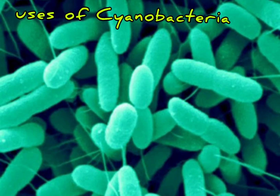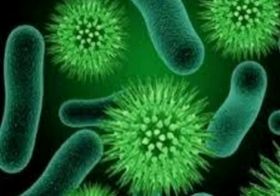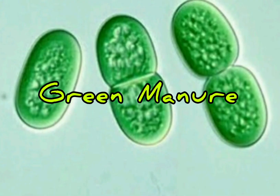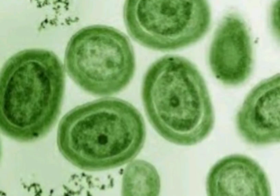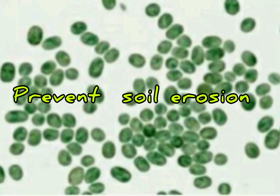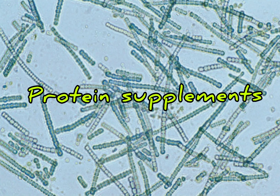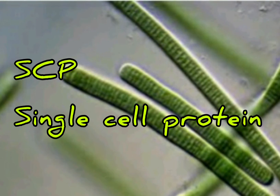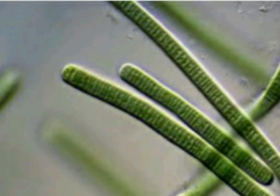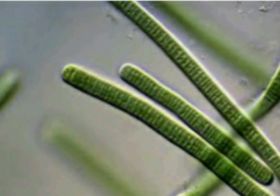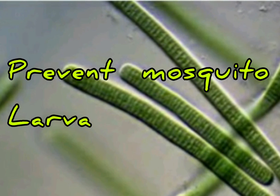The uses of cyanobacteria are as follows. Some cyanobacteria can fix atmospheric nitrogen and are used as green manure by farmers to enrich nitrogen in the soil. Some, like Anabaena, help prevent soil erosion and aid in its conservation. Spirulina is a protein-rich supplement for humans — it is a fast-growing cyanobacteria known as SCP (single cell protein). Finally, cyanobacteria like Anabaena prevent mosquito larvae from growing in the surrounding environment.